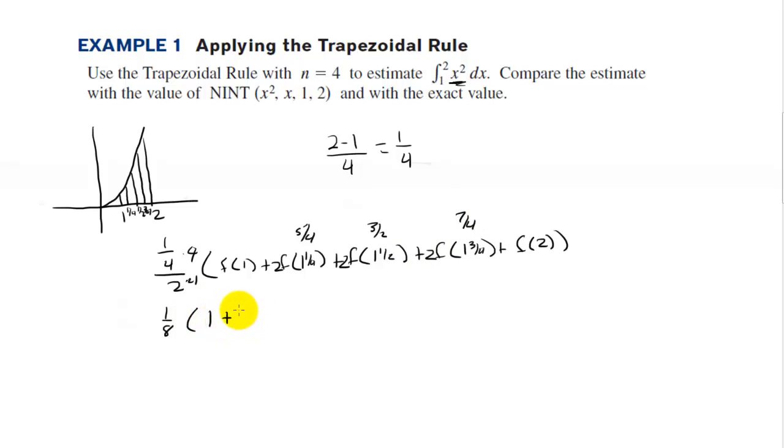So we have 1 plus 2 times 25 sixteenths, plus 2 times 9 fourths, plus 2 times 49 sixteenths, and then we have plus 4. That's 1 plus 25 eighths, plus 9 halves, plus 49 eighths, and then plus 4.